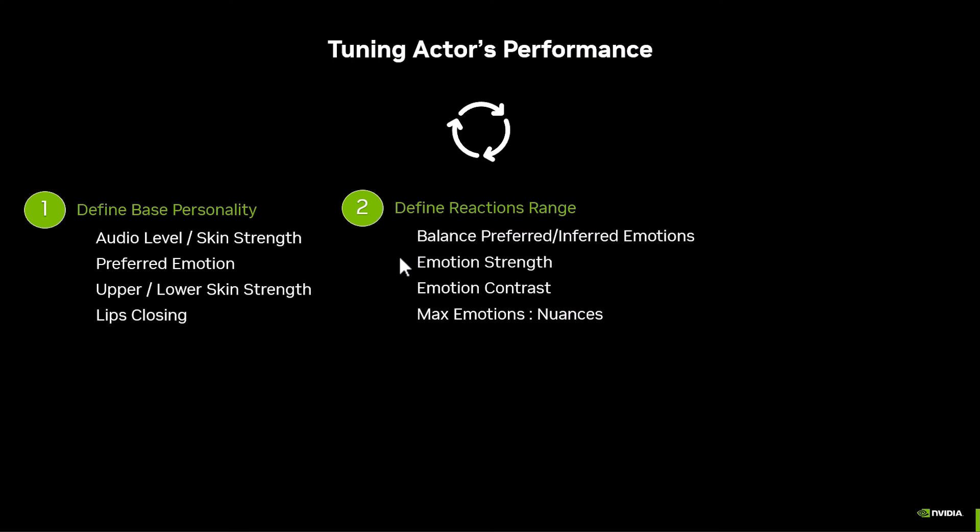Once you have the personality and reaction range defined, you move to final adjustments. You'll use the eyelids offset to adjust the opening of the eyes for the animation, and play with the blend shape multipliers and offset to balance the face, create asymmetries, and things like that. These tools let you refine the final personality and setup for your character. Once you have that, you can throw multiple audio files at the character and it will give you a good performance.